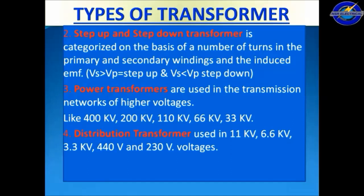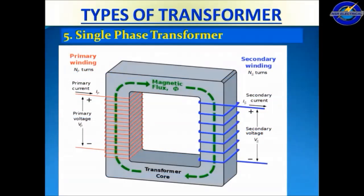Distribution transformers are used at 11 kV, 6.6 kV, 3.3 kV, 400 volts, and 230 volts. This is a single phase transformer; here the primary winding is denoted as NP.